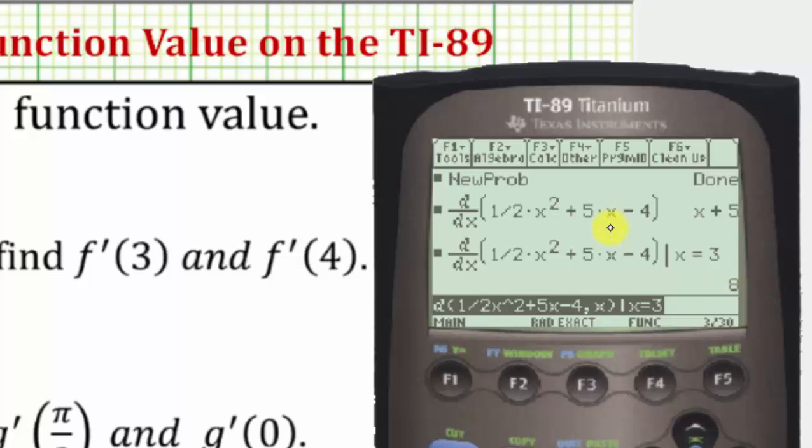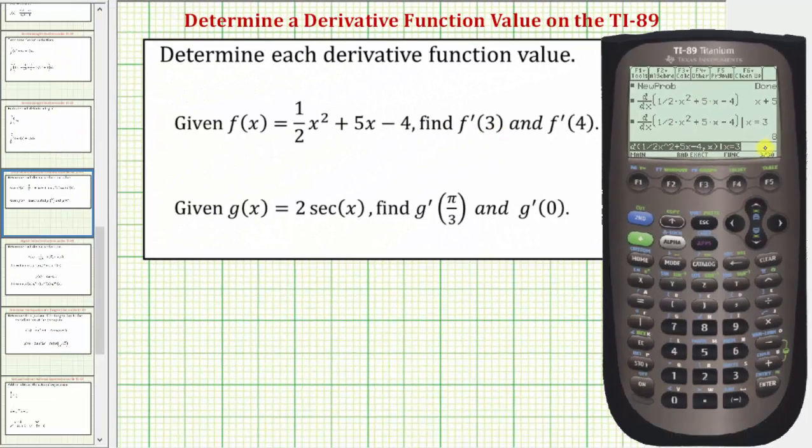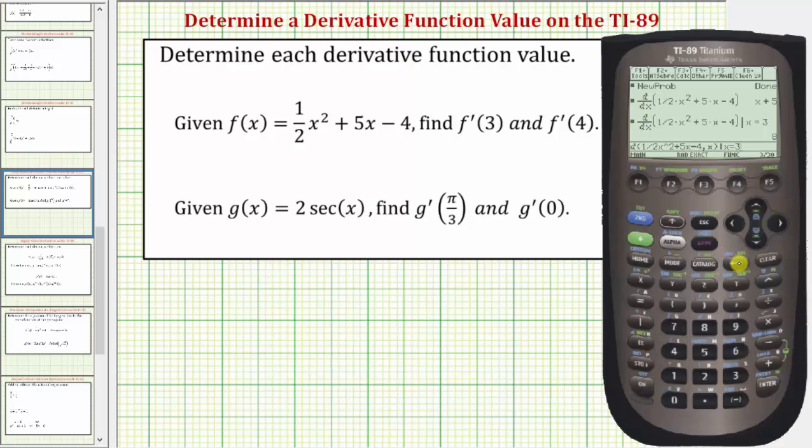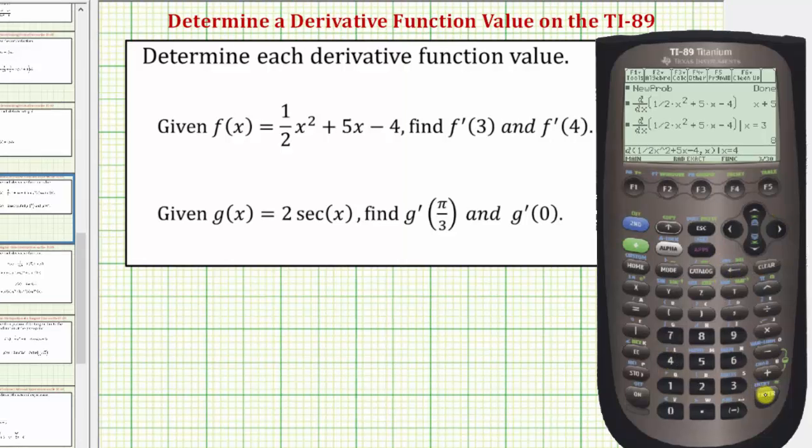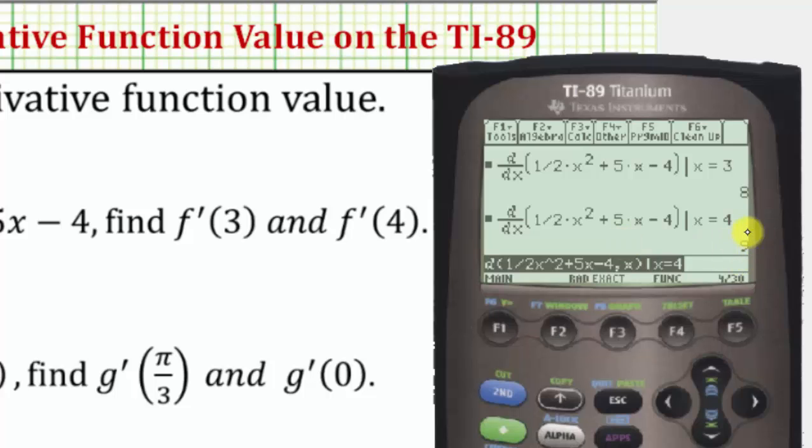Remember, this would be the slope of the tangent line at x = 3. Now to determine f'(4), we just need to change this 3 to a 4. Press the right arrow, back arrow, 4, enter. And we know f'(4) = 9.